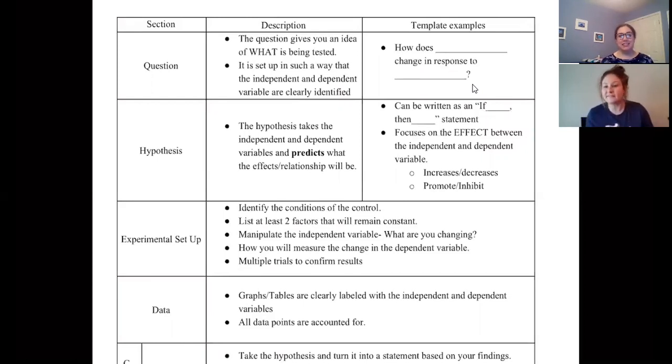So the first part of writing a lab is going to be the question. The question is going to give you an idea of what is being tested. It's set up in such a way that the independent and dependent variables are clearly defined. We've given you a template example so that you can have an idea of how to get the points that you need from an FRQ like this in the least amount of words. You might say something along the lines of how does blank respond or change in response to blank. What we're going to put in these blanks is how does the dependent variable change in response to the independent variable.